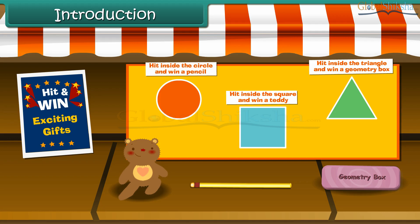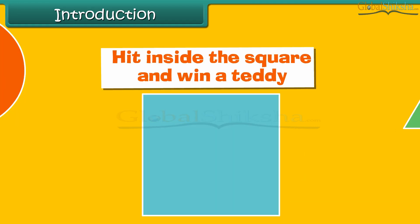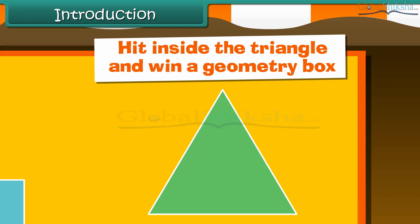At the top of the board, a few lines were written: Hit inside the circle and win a pencil. Hit inside the square and win a teddy. Hit inside the triangle and win yourself a geometry box.